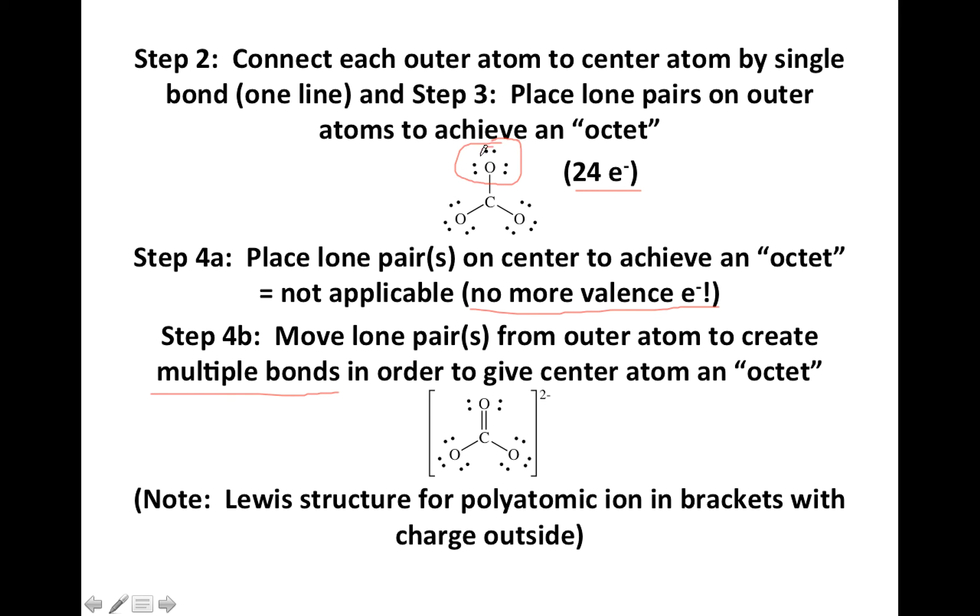What we did is come up here. We took this pair of electrons, and we moved it between the carbon and the oxygen. So now you end up with a double bond here instead of a single bond. If you're counting, the carbon now has four lines coming off of it. So it's got eight, and oxygen has two lone pairs and a double bond, which is four electrons.